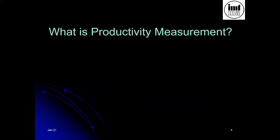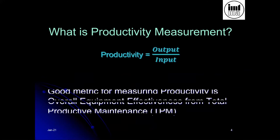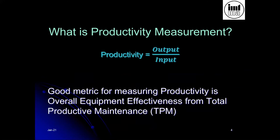When we say productivity measurement, we basically relate an output to an input. Productivity is a ratio of output to input. In terms of manufacturing, under the umbrella of total productive maintenance, we have a metric called overall equipment effectiveness, or OEE. This is a very interesting and good metric for measuring productivity — a language that can be used in all organizations and universally understood. We are going to talk about OEE as a productivity metric for this presentation.